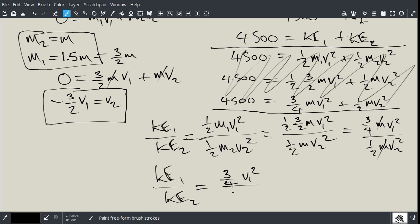And so I'm left with KE1 all over KE2 is equal to 3 quarters V1 squared divided by one-half V2 squared. Now what I do is I take this substitution here, and I'll substitute that in. So I'm going to get 3 quarters V1 squared divided by, and now I'll get on the bottom one-half, and now I'll get negative 3 over 2, V1 squared, because you see V2 is negative 3 halves V1, but I still have to square that because it's V2 squared.